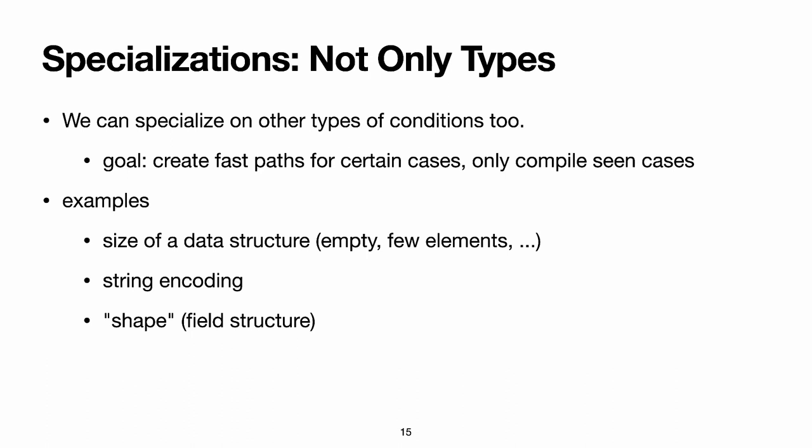For instance, in TruffleRuby, it's recurrent that we write specializations for the cases where an array or a dictionary is empty, as that considerably simplifies the logic for those cases. Even if the array is not always empty, it creates a very fast path for empty arrays. Another example is that we can cache the encoding of a string, because many string operations depend on the encoding. We can also cache on the shape of an object, and the shape of an object is the structure of its fields. That's because in a language like Ruby or JavaScript, you can add fields to any object, but most objects just have the standard field layout that exists when the class was defined, and so we can optimize that case to be faster.